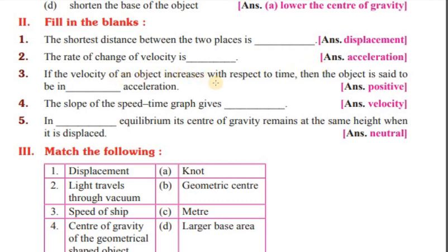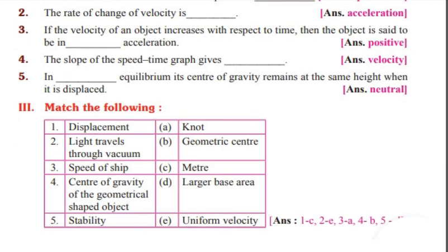If the velocity of an object increases with respect to time, then the object is said to be in accelerated motion. The slope of the speed-time graph gives velocity.